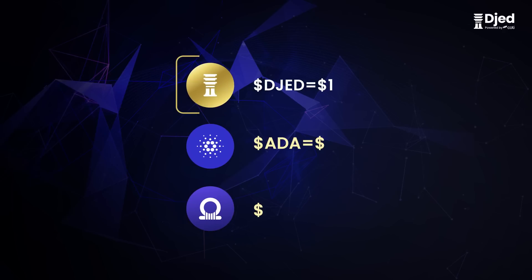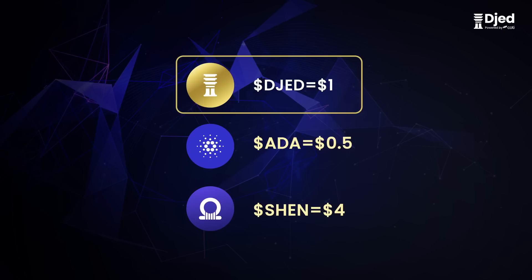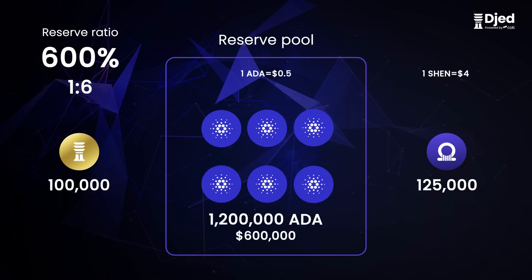Now that we understand the mechanism, let's move on to some more complicated numbers. In the previous example we used very easy numbers just to make this explanation easier to understand. Now let's use different figures. Let's say that ADA's value is $0.5 and SHAN's value is $4. As always, JED maintains a stable value of $1 and will continue to do so in the future. In this scenario, there are 100,000 JED minted, 125,000 SHAN minted, and $600,000 worth of ADA, which are 1.2 million ADA in the reserve pool.